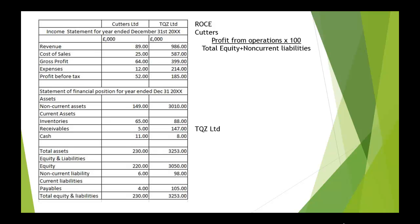So we have our two companies, Cutters and TQZ. We are looking for the return on capital employed. For Cutters, the profit from operations is 52, times 100, divided by total equity plus non-current liabilities: total equity is 220, non-current liabilities is 6, which comes to 5,200 over 226, giving 23%. We'll do the same thing for TQZ Limited.